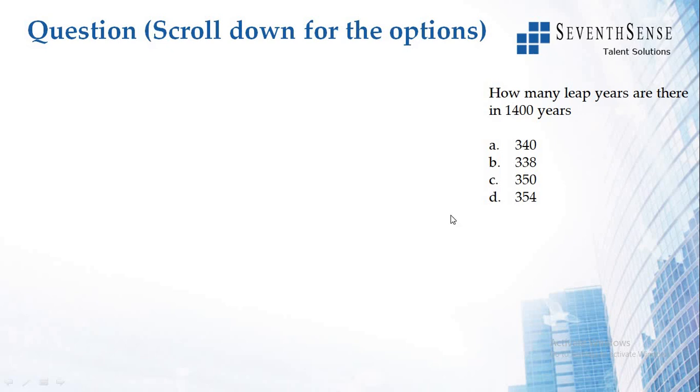How many leap years are there in 1400 years? Here you have to follow two simple steps. First step is you have to divide the given year by four. So that is 1400 by 4 is equal to 350.